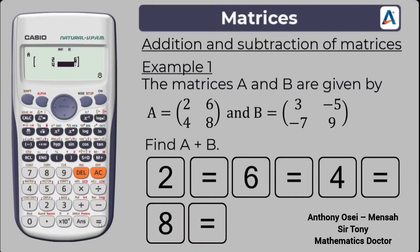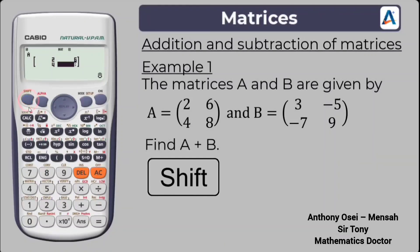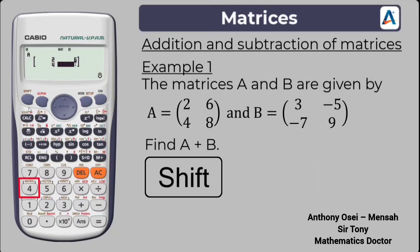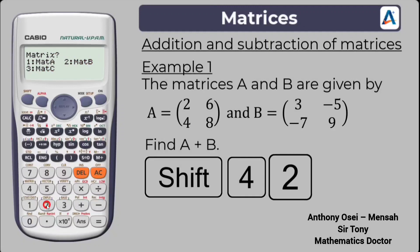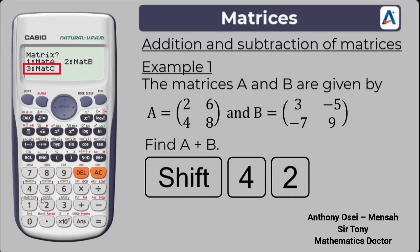Now that we've input matrix A as 2, 6, 4, 8, we save it in the calculator's memory. Press shift, then press number four — the matrix key. Select data, which is option number two. Then choose matrix A, which is option number one, to label and store it as matrix A in the calculator.